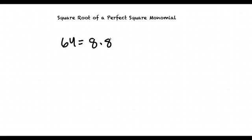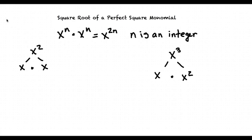In regards to variable values, any variable with an even exponent is a perfect square. Why is that? This is because any variable multiplied by itself will result in an even exponent.